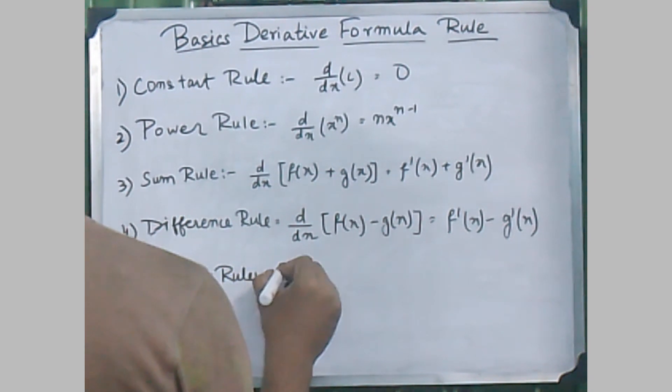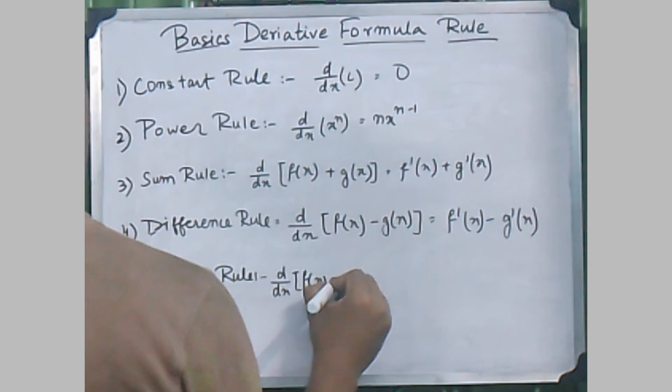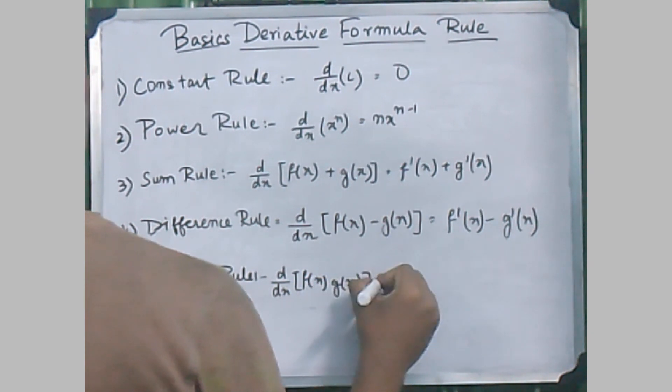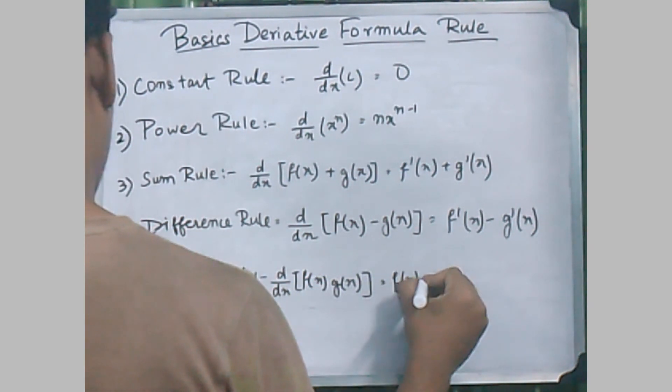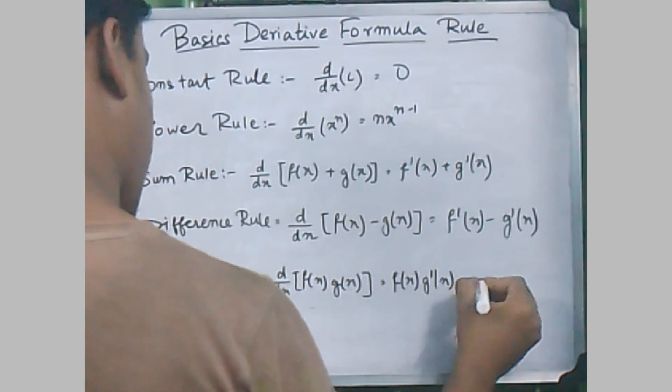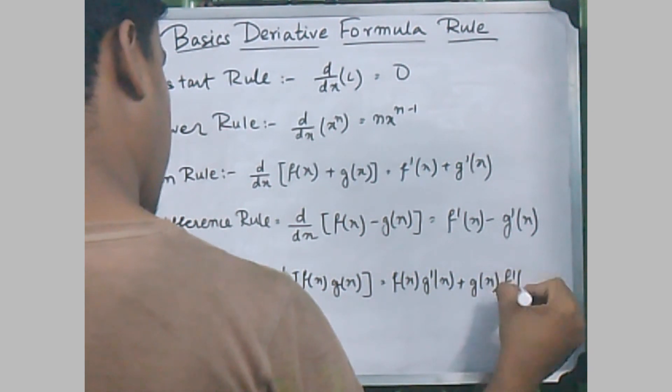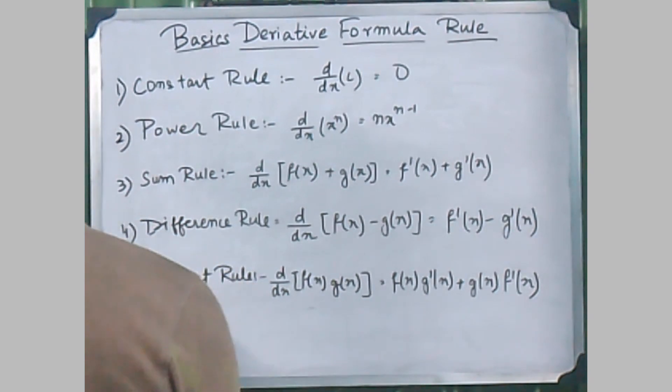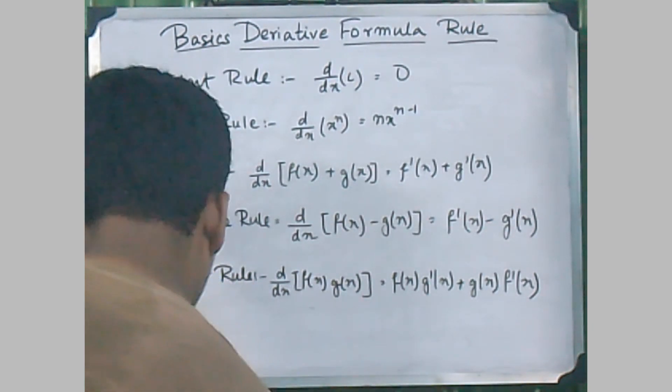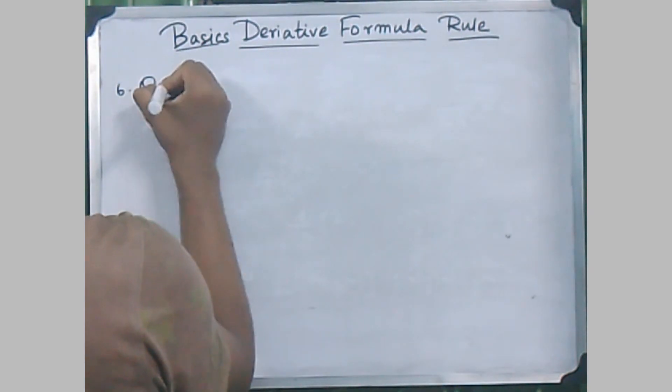The fifth rule is the product rule, where d/dx of f(x)·g(x) will result to f(x)·g'(x) + g(x)·f'(x).